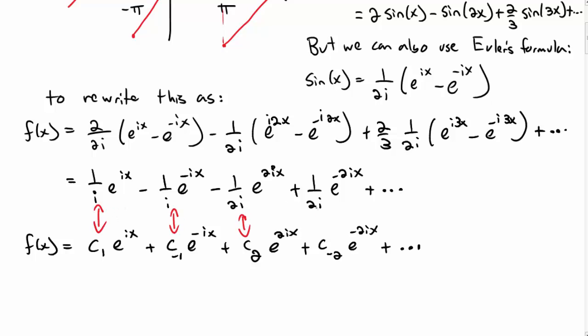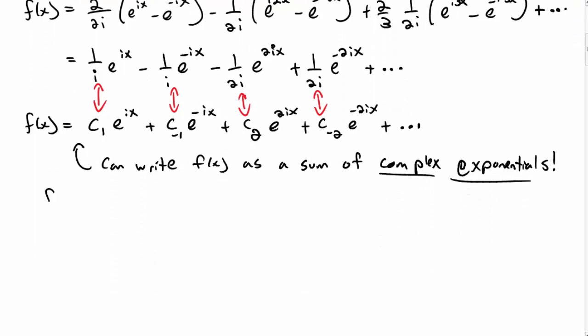And so I can read off the coefficients of these complex exponentials from my expansion above. And so we can write, in general, f(x) as a sum over complex exponentials instead of just sines and cosines. In particular, I could write it as f(x) is the sum over n of c_n e^(inx).